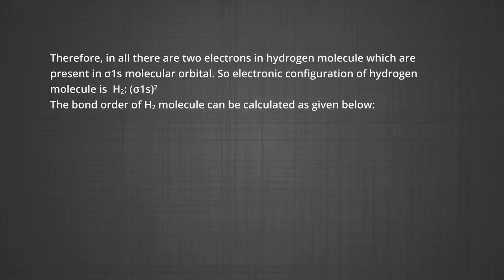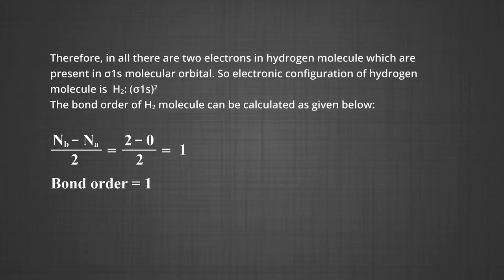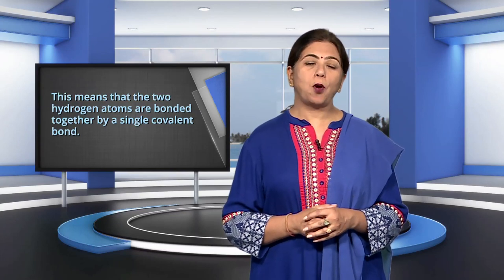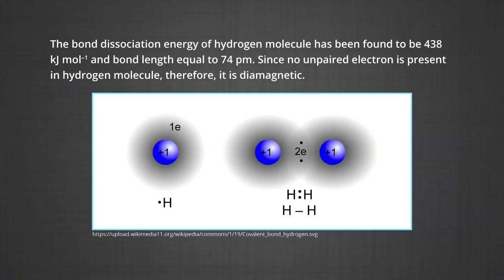The bond order of H₂ can be calculated as: ½(N_b − N_a) = ½(2 − 0) = 1. The hydrogen atoms are bonded by a single covalent bond. The bond dissociation energy of the hydrogen molecule has been found to be 438 kJ/mol and the bond length is 74 pm. Since no unpaired electron is present in the hydrogen molecule, it is diamagnetic.